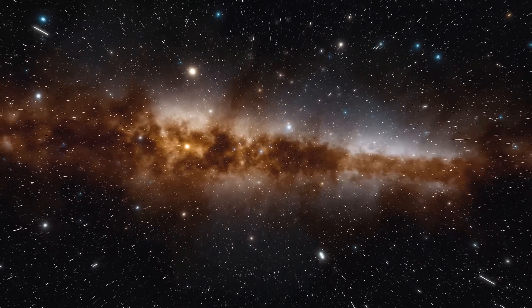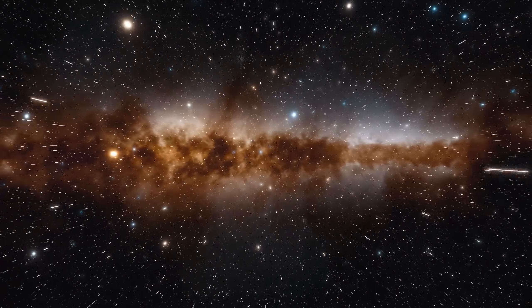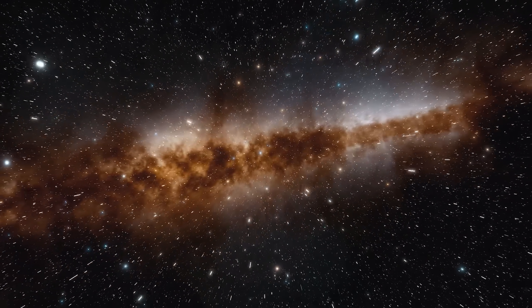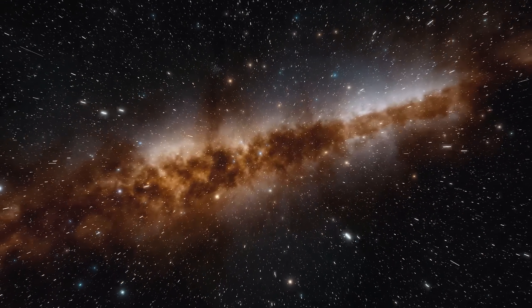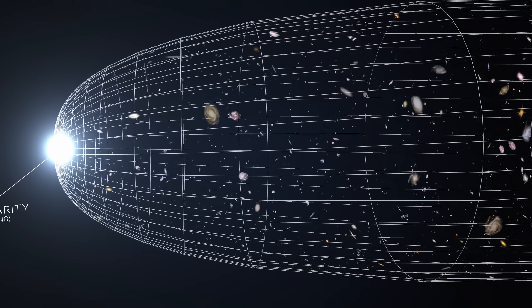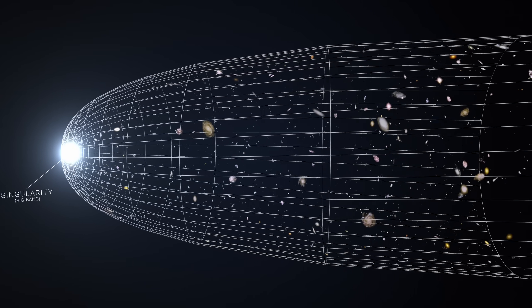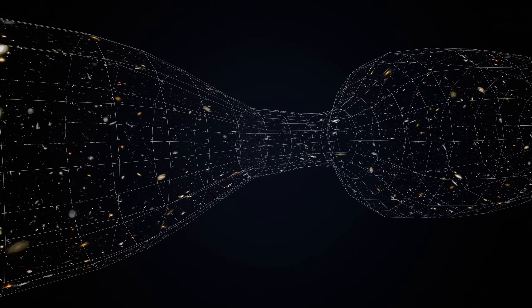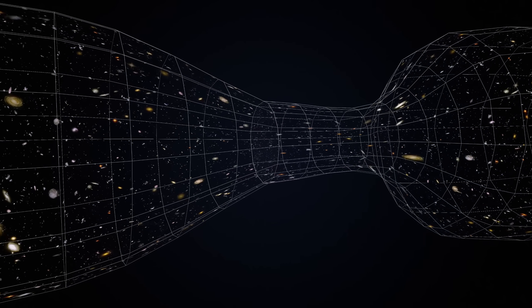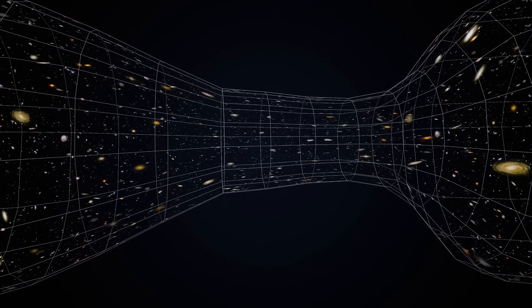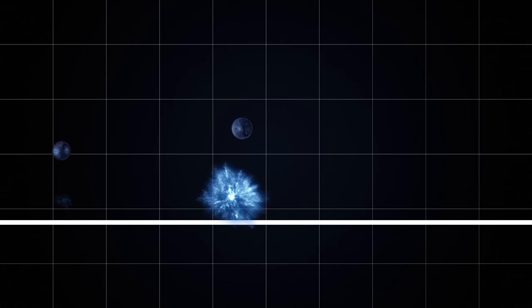This theory, like the oscillating universe theory, postulates a universe with no beginning and no end, but with an infinite cycle of expansion, contraction, and rebirth. In this way, it circumvents the singularities that plague the other models. However, unlike the oscillating universe theory, the Big Bounce focuses specifically on the transition point, the bounce, between contraction and expansion. So how does quantum mechanics fit into this?